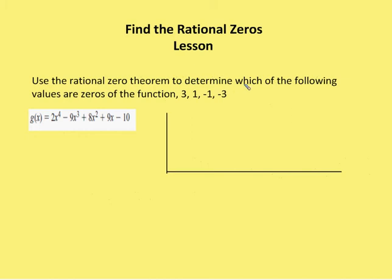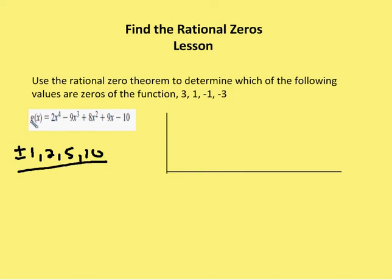When you use the rational zero theorem to determine which of the following values are zeros of the function, let's take a look at the possible zeros. The factors of the constant are going to be plus or minus one, two, five, and ten. And the factors of the leading coefficient are going to be plus or minus one and two.